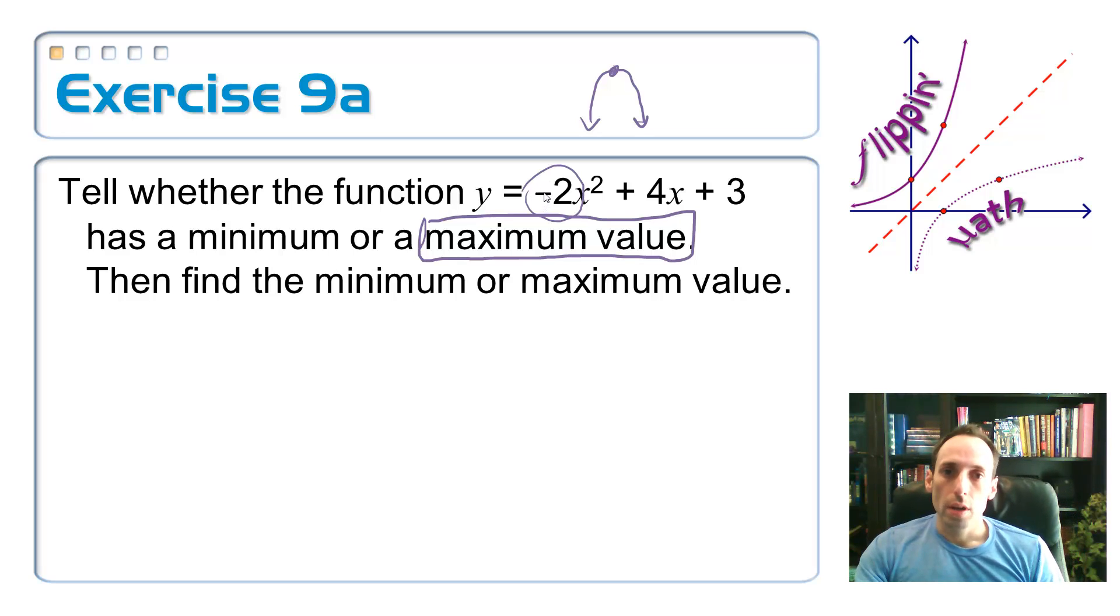well, I've got two options. I could find the x-coordinate of the vertex and put it back into the equation and find the y-value, or I could just use the other part of that vertex formula if I could only remember it. Oh well, I can't remember it, so I'm just going to use this.